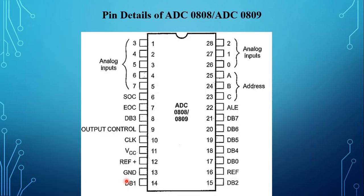This is the pin diagram of ADC 0808 or ADC 0809. ADC has 8 input channels. To select the desired input channel, it is necessary to send a 3-bit address on the ABC inputs. The address of the desired channel is sent to the multiplexer address input through port pins.